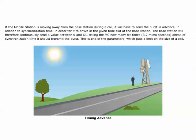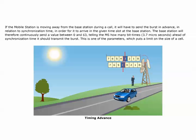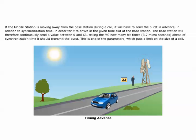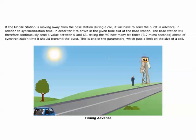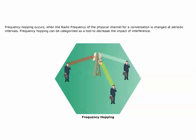If the mobile station is moving away from the base station during a call, it will have to send the burst in advance in relation to synchronization time in order for it to arrive at the given time slot at the base station. The base station will therefore continuously send a timing advance value between 0 and 63 to the MS.